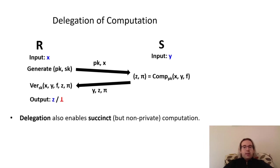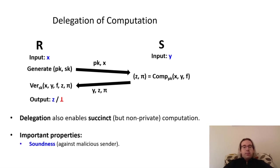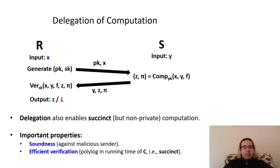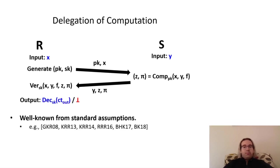Note that some delegation schemes additionally have the property that the first round depends on the functionality F. We'll focus on adaptive schemes where, like in the message flow outlined above, this is not the case, and the functionality can be decided by the sender in the second round. Importantly, this approach gives us soundness, or that the receiver can reject if the sender performed the computation incorrectly, and it also maintains our property of succinctness, since the proof size and the verification algorithm's running time are polylogarithmic in the functionality's running time. Furthermore, we know of many delegation schemes for arbitrary polynomial time functionalities, including adaptive ones, which are based on standard assumptions.